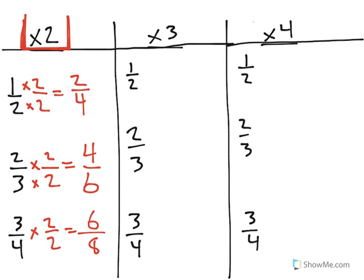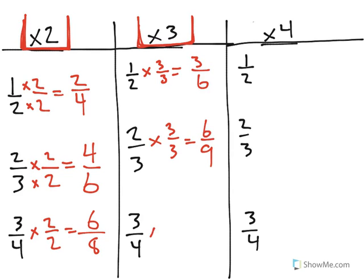6 eighths is equivalent to 3 fourths. Now, the reason that we have this again, times 3 and times 4, is because it doesn't matter what number you multiply by. As long as you are multiplying by the same number in the numerator and denominator, you're going to end up with an equivalent fraction.